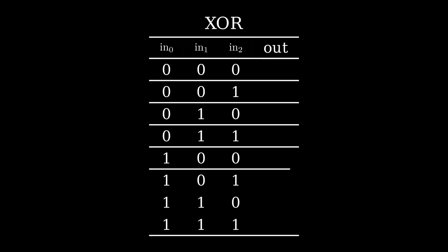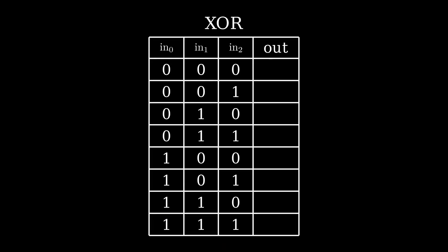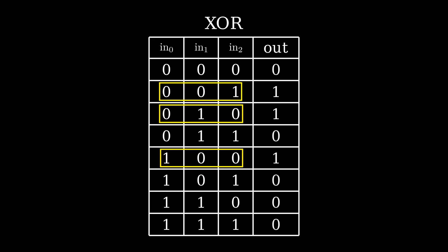Finally, the logical gate XOR, which means exclusive OR. With XOR, if exactly one of its inputs is 1, then the output is 1; otherwise the output is 0. As I said, we are considering logical gates as the mechanisms of our system.